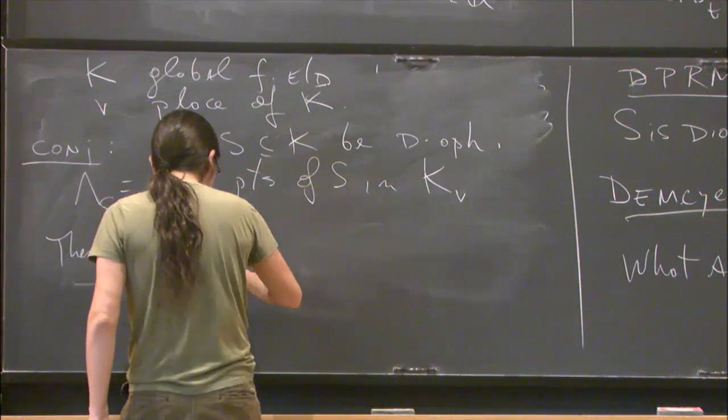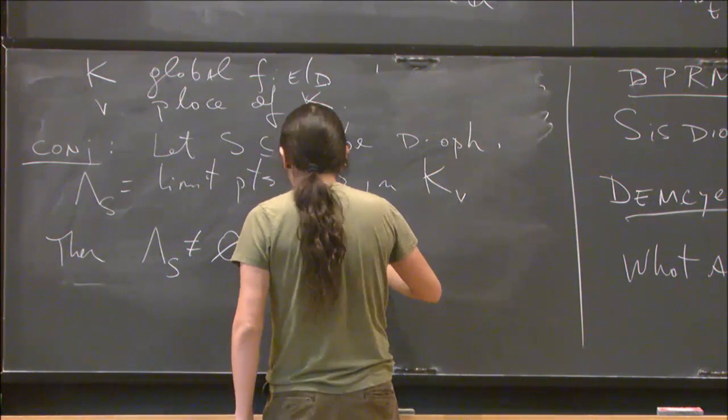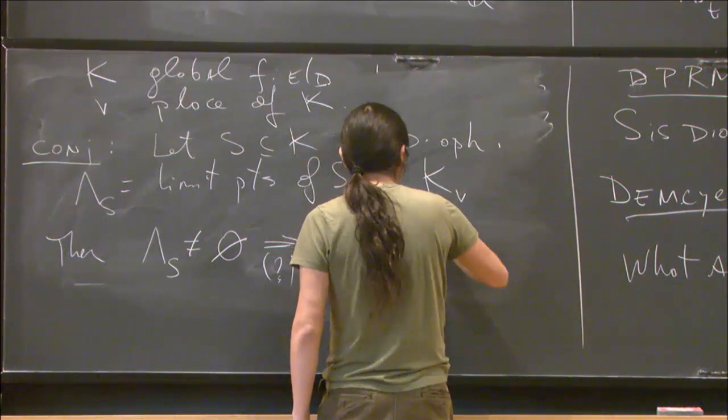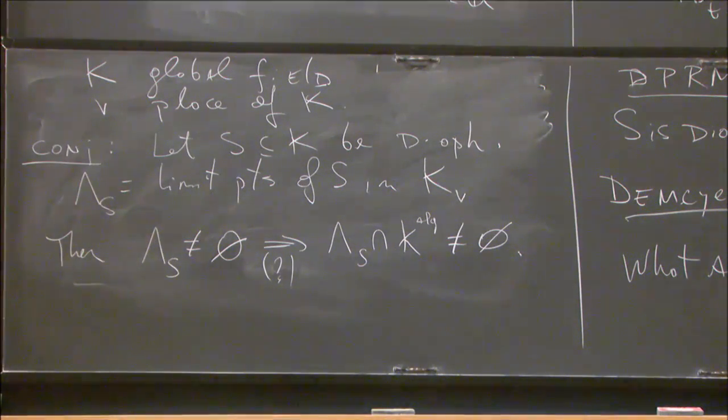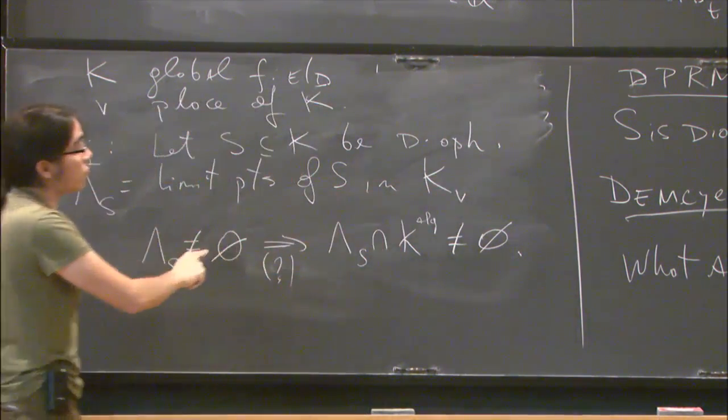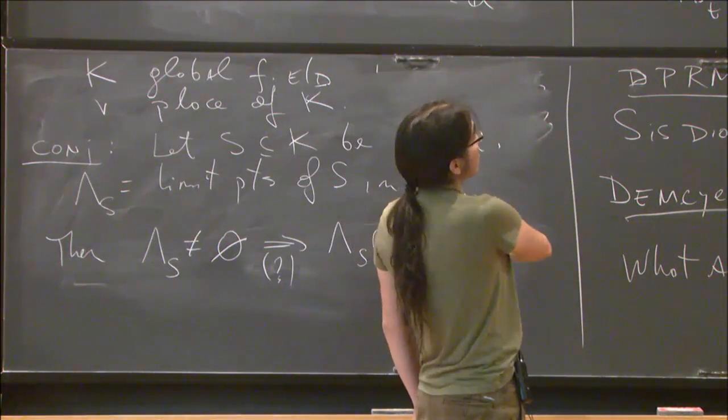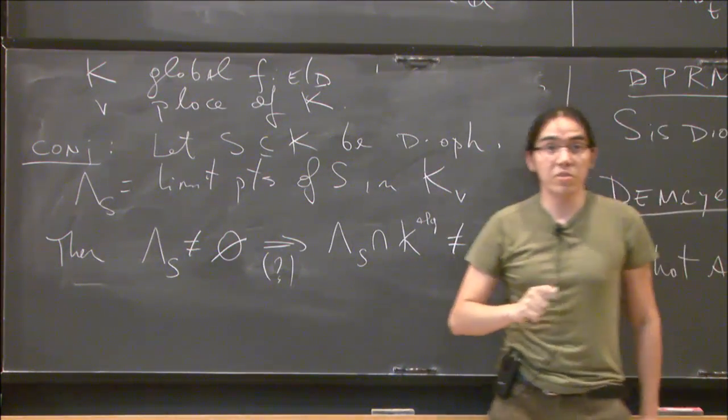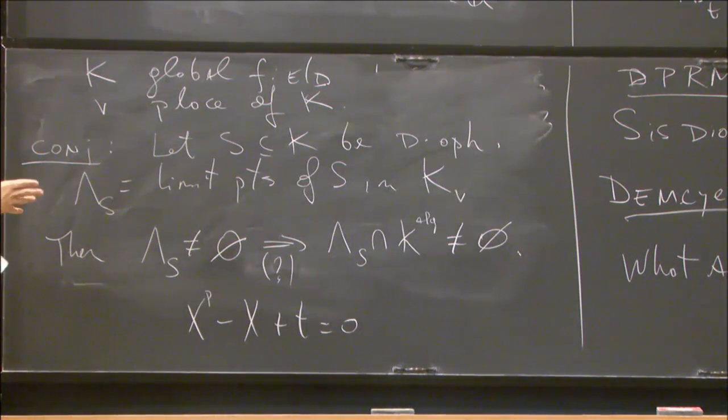Then, if this thing is non-empty, and here is the conjecture: if this thing is non-empty, then you should be getting some algebraic element there. And so this conjecture, of course, implies for every global field—well, there is some slight argument—for every global field that listable is different to Diophantine. Now, if you believe in Masser's conjecture, you get this for Q and the place at infinity. Now, there is a counterexample to Masser's conjecture. However, this counterexample is consistent with this conjecture, because that set has a unique limit point, which is a solution of the equation x^p - x + t. So that counterexample to Masser's conjecture actually fits nicely with this other problem. And that's all I want to say. Thanks.